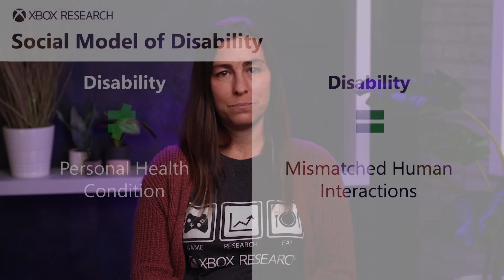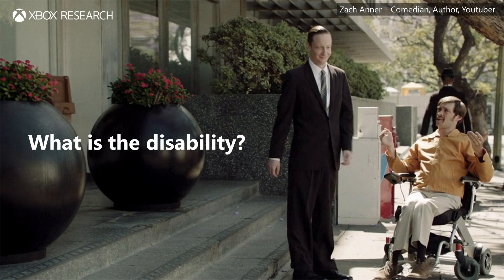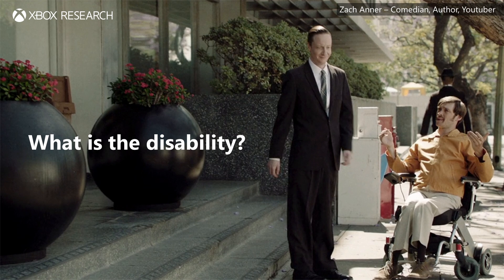We'll start with recognizing exclusion, and we'll use an example to illustrate this principle. But first, let's go over the social model of disability — a model I'd like you all to keep in mind during the workshop. This model thinks about disability not as a personal health condition, but instead as mismatched human interactions. This photo is a scene from an episode of Drunk History, featuring disabled comedian and author Zach Anner. And I have a question for you all to consider: in this picture, what do you think the disability is?